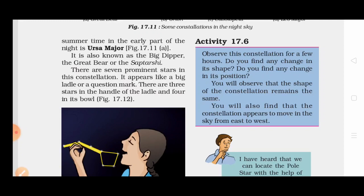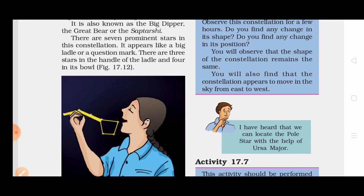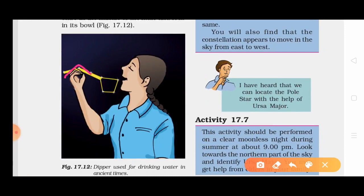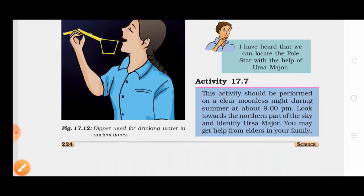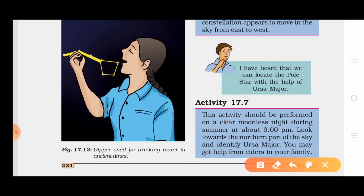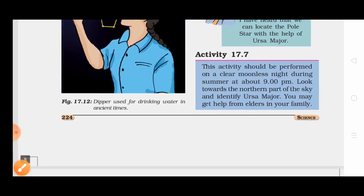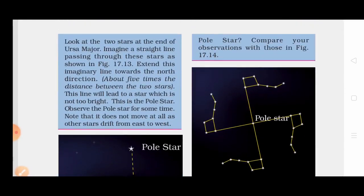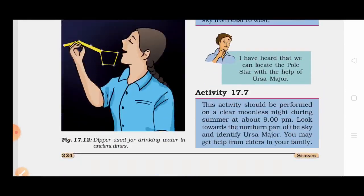Ursa Major is also known as the Big Dipper. There are seven prominent stars in this constellation. It appears like a big ladle or a question mark. There are three stars in the handle of the ladle and four in the bowl. The handle has three stars and the bowl has four stars, making seven stars total, and in this position it looks like a dipper.